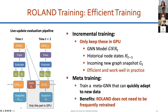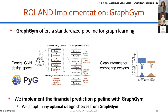We also have an efficient training scheme for the Roland framework. Since financial networks are constantly updated, we propose an incremental training scheme that keeps only the GNN model, historical node states, and incoming new graph snapshots on GPU — making training efficient for large-scale dynamic networks. We also have a novel meta-training schema where a metagene is trained to quickly adapt to new data, so Roland does not need to be constantly retrained to adapt to new dynamic graphs. Roland is implemented using PyG and GraphGym, benefiting from the general GNN design space offered by GraphGym.